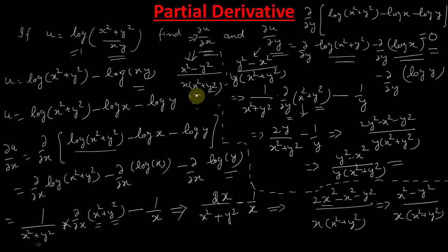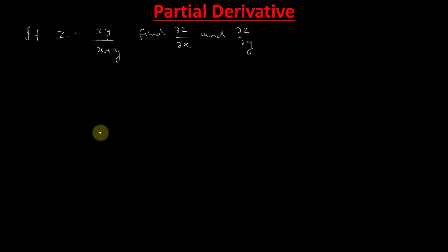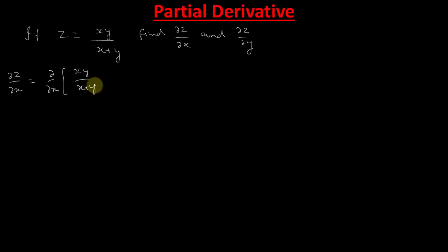It is quite easy — all the formulas are exactly the same as simple derivatives. The only thing is that when doing the derivative with respect to one variable, all other variables are considered constant. Now let us look at one more question: z = xy/(x + y). We need to find ∂z/∂x. We apply the quotient rule, considering y as constant.